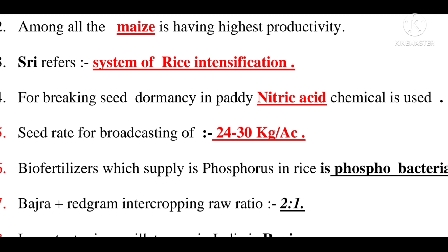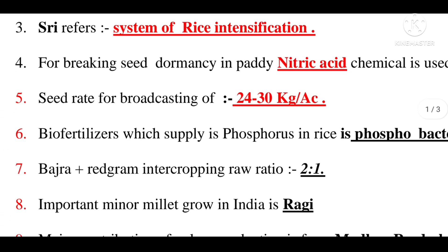When applying biofertilizer, phosphobacteria is used for rice. Phosphobacteria as a biofertilizer supplies phosphorus to the rice crop.